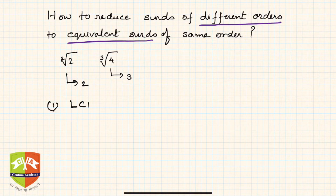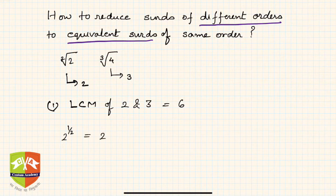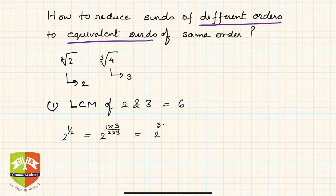The first step is to find the LCM of 2 and 3, which is equal to 6. We will be reducing both radicals to order 6. Square root of 2 is nothing but 2 to the power 1/2. We can write 1/2 as (1/3 × 2) divided by (2/3), giving us 2 to the power 3/6. So square root of 2 equals the 6th root of 8.